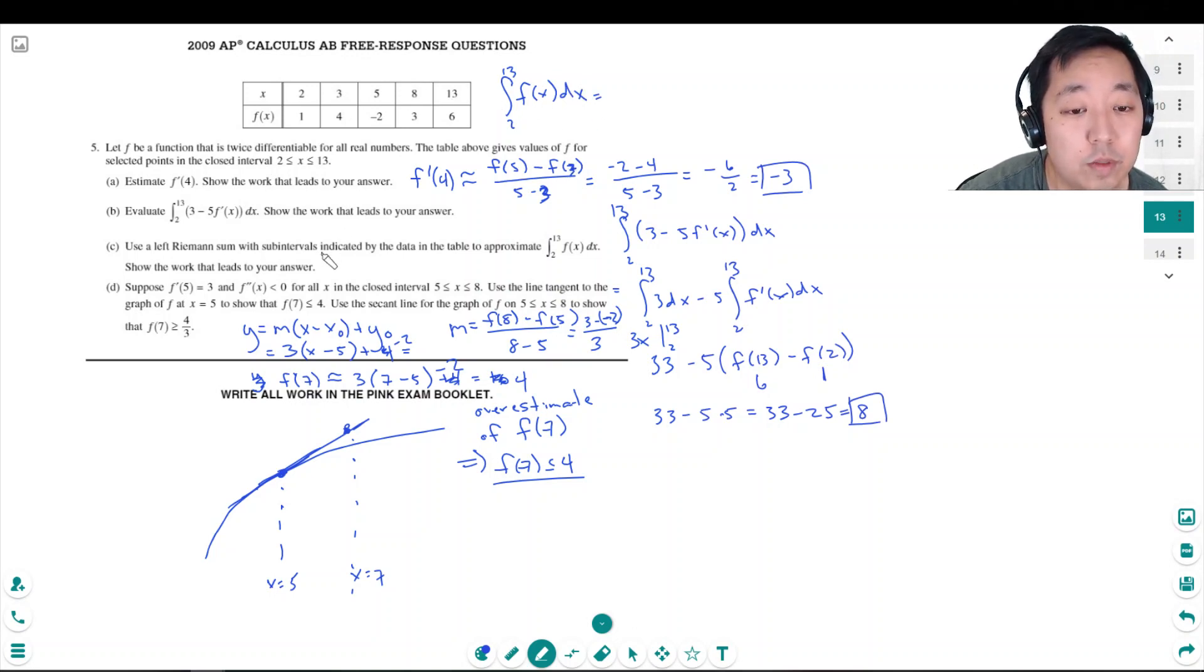So subintervals, I'm going to use the left values here. On the left values, this interval is 1. So it's 3 minus 2, I use the left point. So that's times 1 plus 5 minus 3 times 4 plus 8 minus 5 times negative 2 plus 13 minus 8 times 3. 15, 16, 10, 18. I should be doing that in red because I got it wrong.